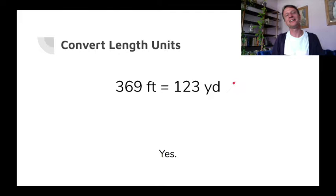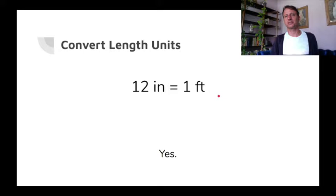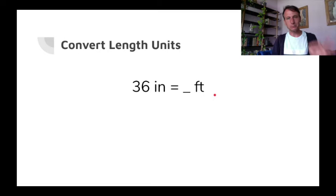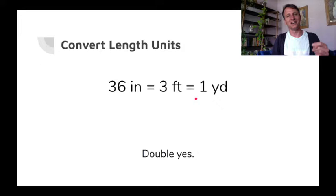12 inches is one foot. So 24 inches — well, it's double, right? 12 doubled is 24, so that's two feet. What we're doing here is dividing by 12. How many 12s are there in 36? 12, 24, 36 — there are three, right? And three feet is also equal to one yard.